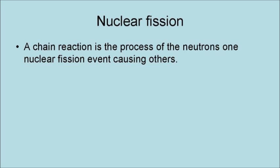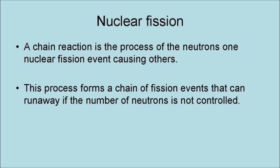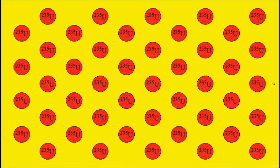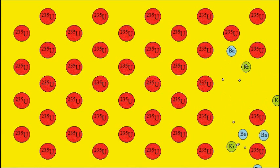A chain reaction is the process of the neutrons from one nuclear fission event causing others. This process forms a chain of fission events that can run away if the number of neutrons is not controlled. The number of neutrons is controlled in a nuclear reactor, but not in a bomb. This is an animation of a nuclear chain reaction.